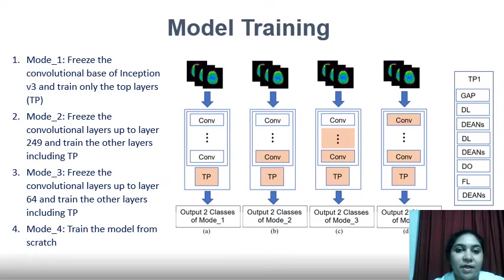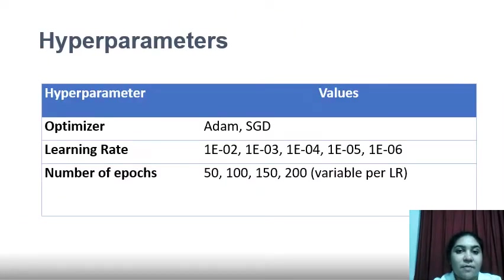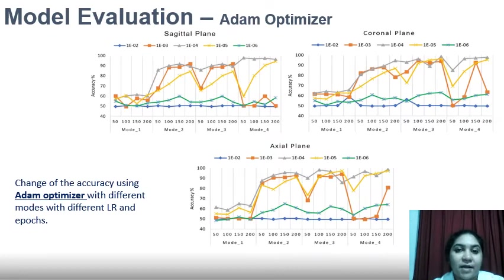The proposed deep learning model was trained with ImageNet weights in four different modes. In Mode 1, the convolutional base of Inception V3 is frozen and only the top layers are trained. In Mode 2, convolutional layers up to layer 249 are frozen and the remaining layers including the top layer are trained. In Mode 3, layers up to layer 64 are frozen and the others including top layers are trained. In Mode 4, the model is trained from scratch. A table shows all possible hyperparameter combinations evaluated, and a graph illustrates accuracy values for different modes with various learning rates and approaches using the Adam optimizer in sagittal, coronal, and axial directions. Overall, unfreezing more layers results in higher ASD classification accuracy.